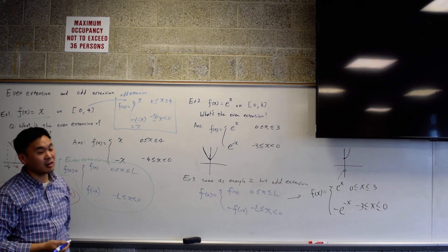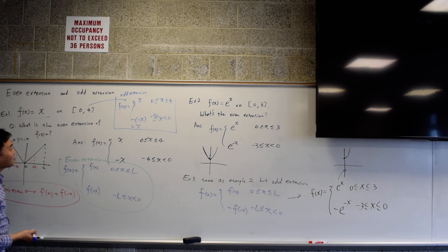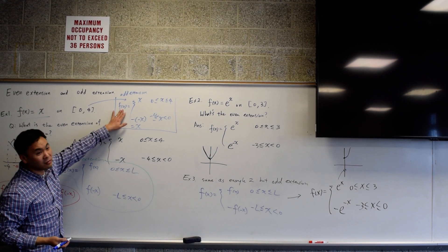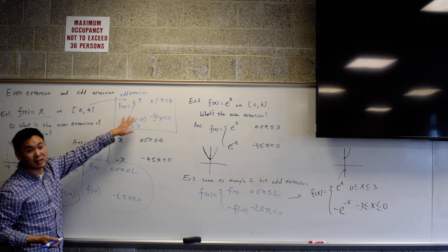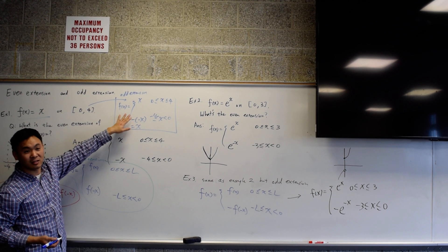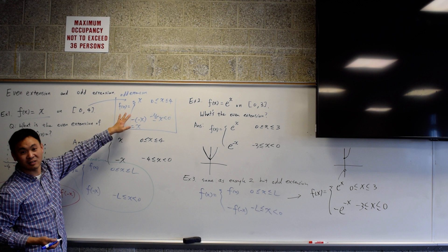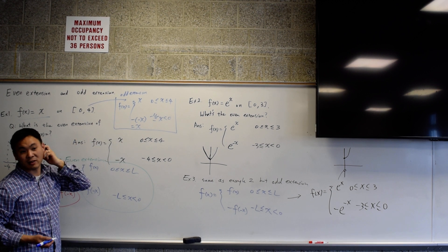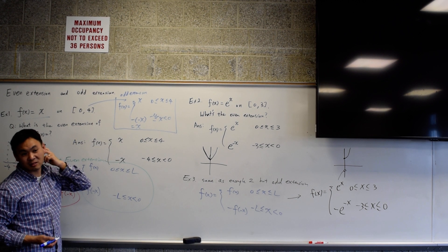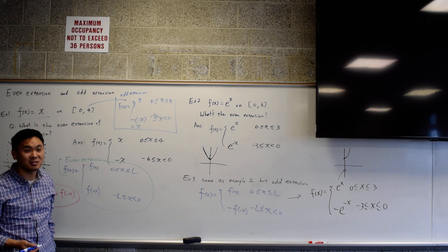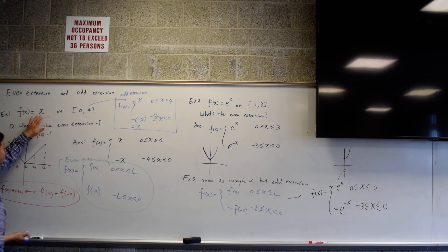And then think about what this means. It means that f of x is just x. Does that make sense? Why does it make sense? Because f of x equal to x is already an odd function. So if you had this on the right side, then the natural one that you would get just if you didn't change the definition but just expanded the interval from negative 4 to 4, that would be an odd function.